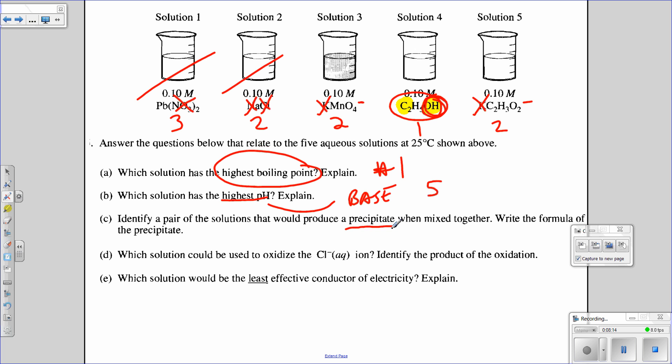Identify a pair of solutions that would produce a precipitate. Solubility rules dictates that if we go back here and we look, that Pb and Cl, or you can put, so that would be solution one and solution two, or you could pick Pb and MnO4 would form a precipitate. Next thing, which solution could be used to oxidize Cl ion? What you're looking for if you're going to oxidize something is you need a classic reducer, and now that we've done our reductions, you know that MnO4 is a classic reducer. So that would be solution number three.